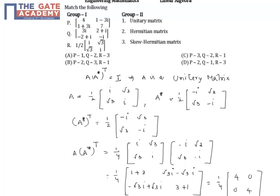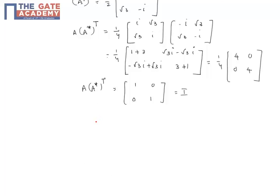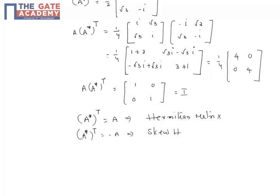From the matching, R corresponds to the unitary matrix. Similarly, for the Hermitian matrix definition: if you conjugate and transpose a matrix A and get the same matrix back, it is a Hermitian matrix. If you get minus A, then it is a skew-Hermitian matrix.